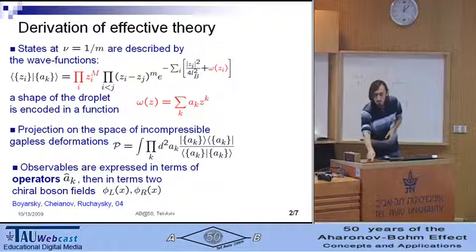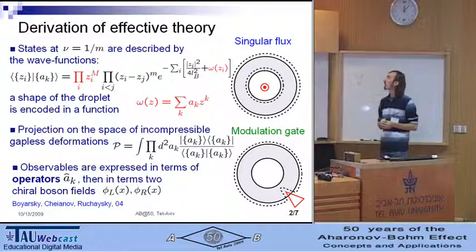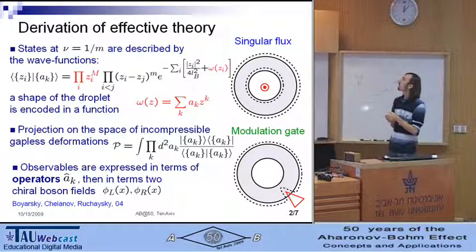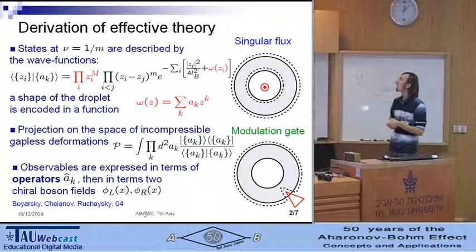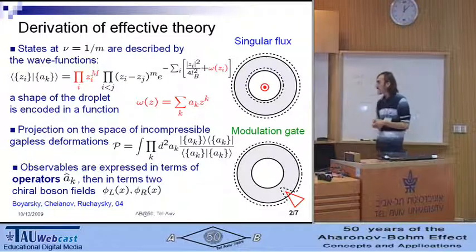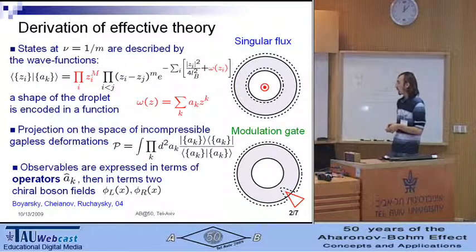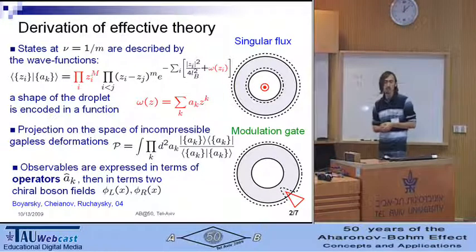Importantly, we implement the projection for two different cases. In first case, we change the flux with help of singular flux through a flux tube in the center of the interferometer. And in the second case, the flux is varied by the application of modulation gate voltage.